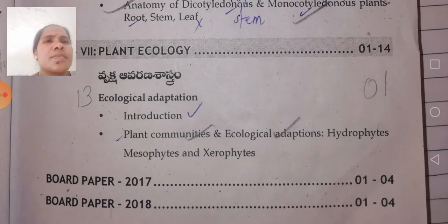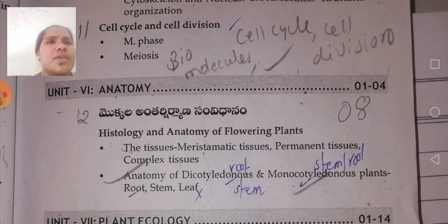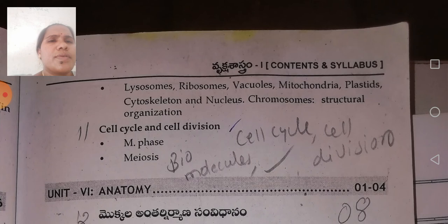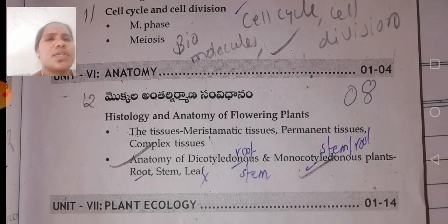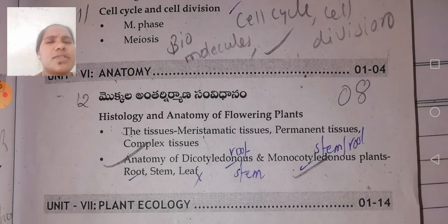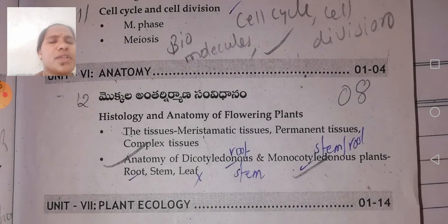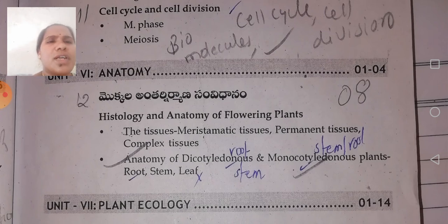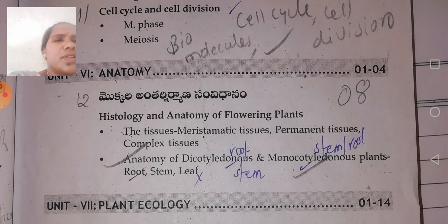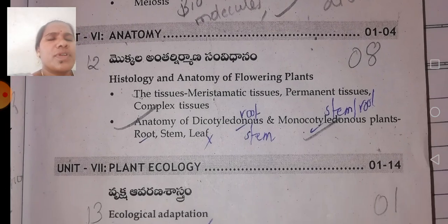Looking at the 6th unit, we have to study Anatomy — including dicot and monocot, stem and root structures.